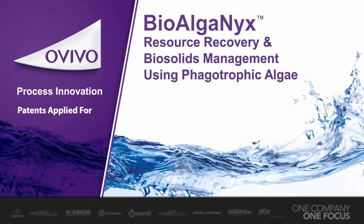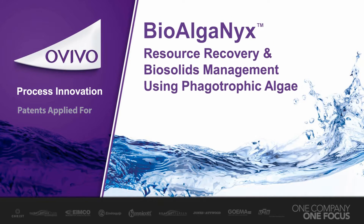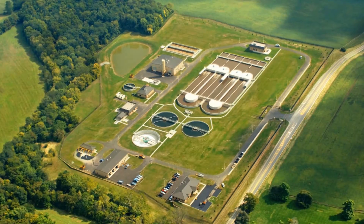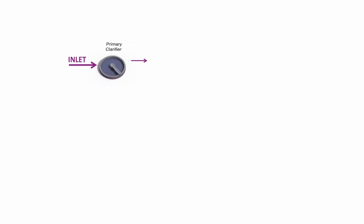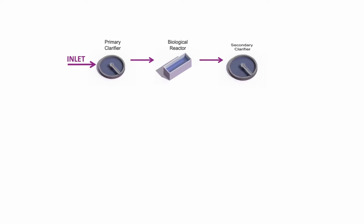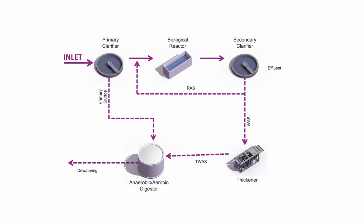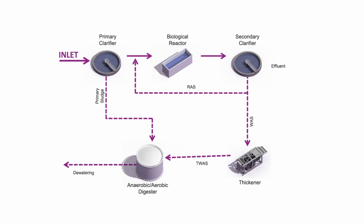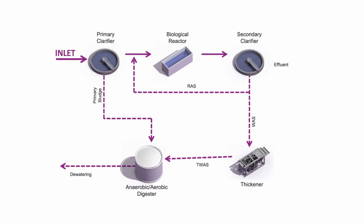Biological wastewater treatment is the most commonly employed method for reducing the organic and inorganic contaminants in wastewater before either reuse or safe discharge of treated water. Biological wastewater treatment primarily relies on the use of naturally occurring microorganisms, mainly bacteria, for degradation of these contaminants, and the treatment invariably generates excess sludge.